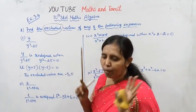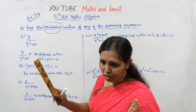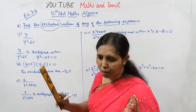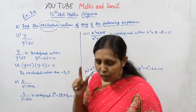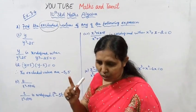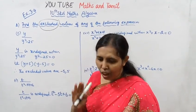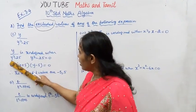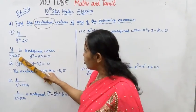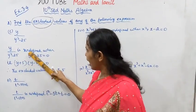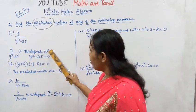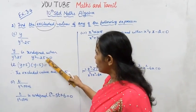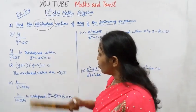The excluded values: we look at the denominator. Denominator equal to zero — that makes the expression undefined. First problem: y divided by y squared minus 25 is undefined when denominator y squared minus 25 equals zero.